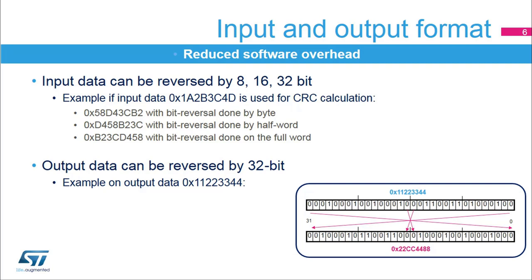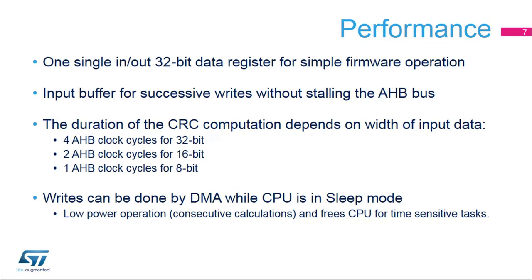The operation is done at bit level. For example, output data 0x11223344 is converted into 0x22CC4488. The CRC data register includes an input buffer which allows for immediate writes by the CPU or DMA peripheral of a second data word without waiting for any wait states due to an active CRC computation.